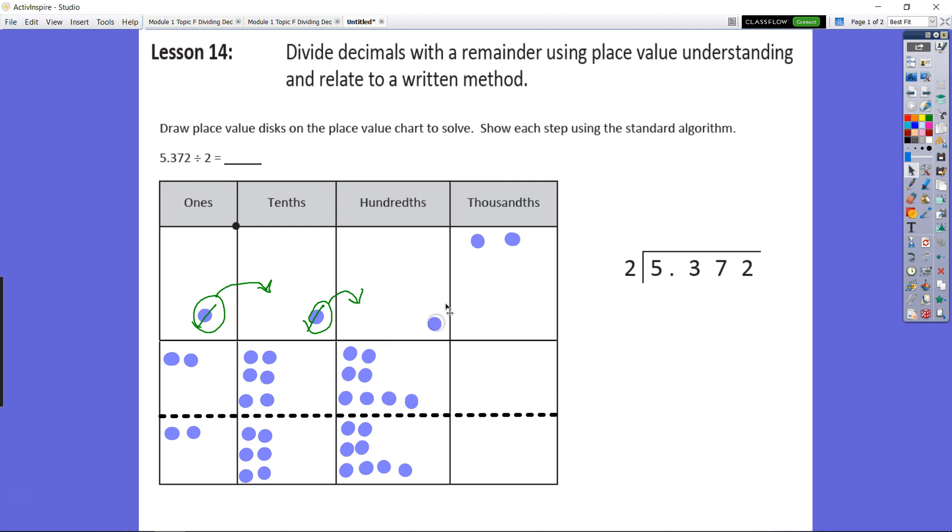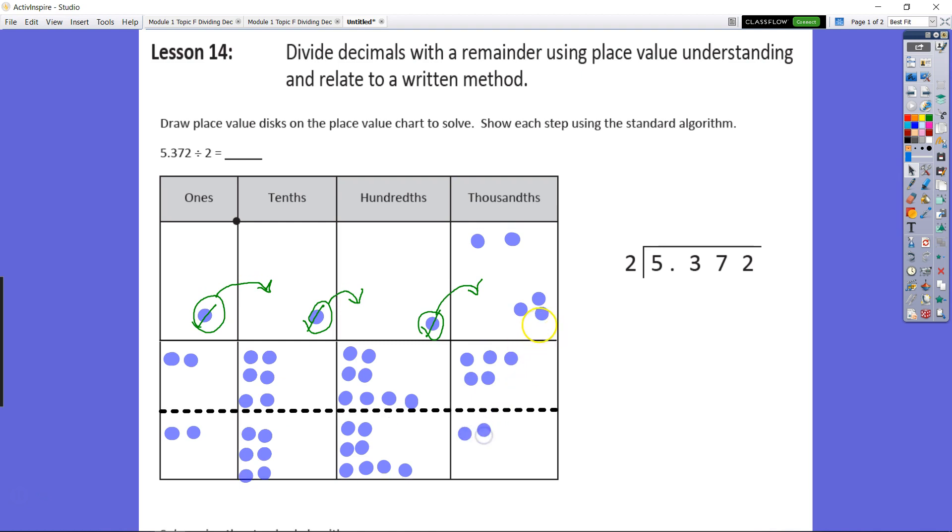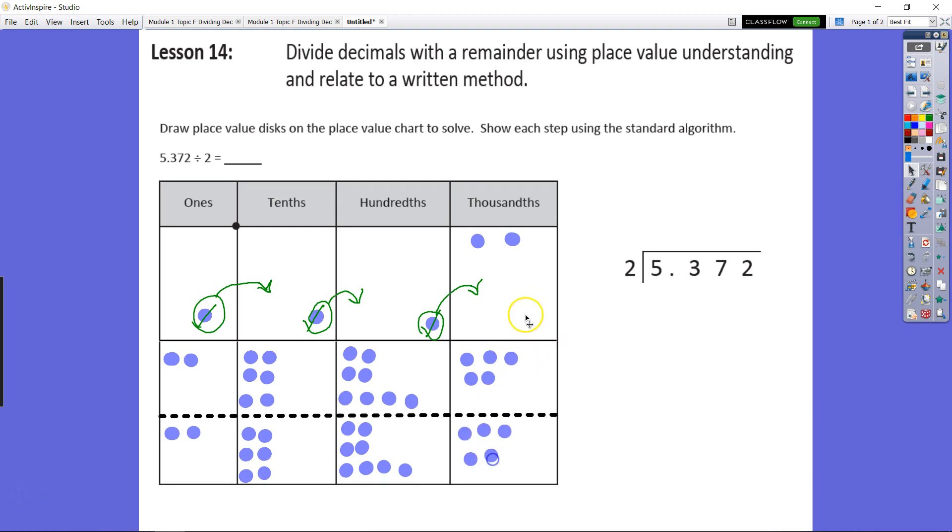With one hundredth remaining, we need to regroup this as ten thousandths. Now we have ten thousandths that we regrouped plus our two thousandths, giving us twelve thousandths. Dividing into two groups gives us six thousandths in each group, with two remaining.